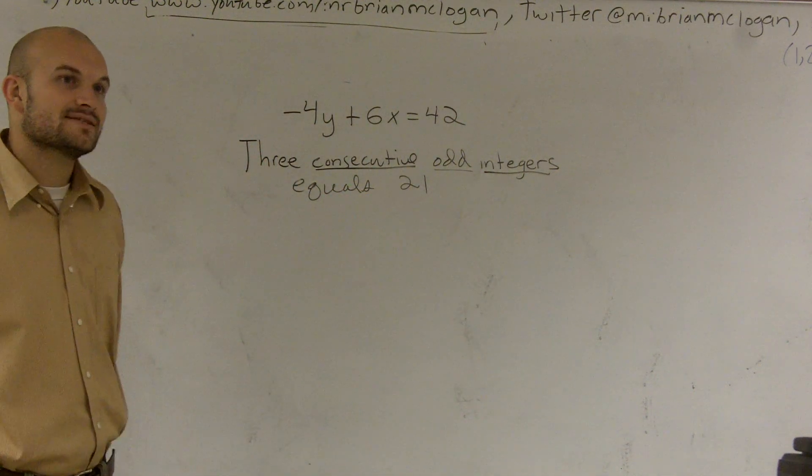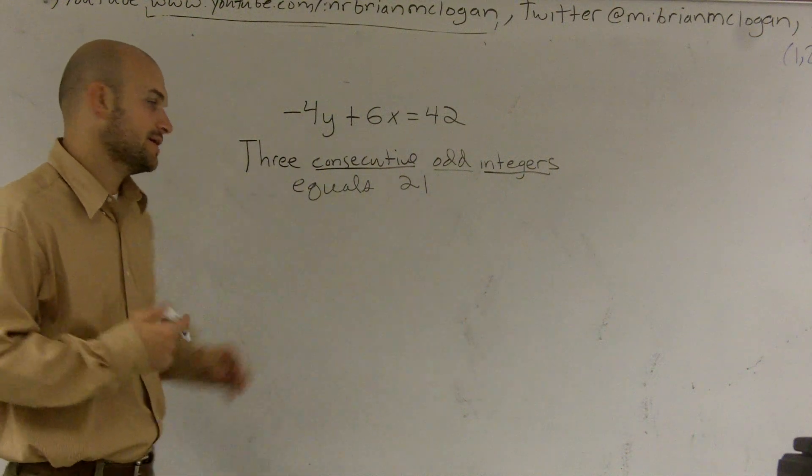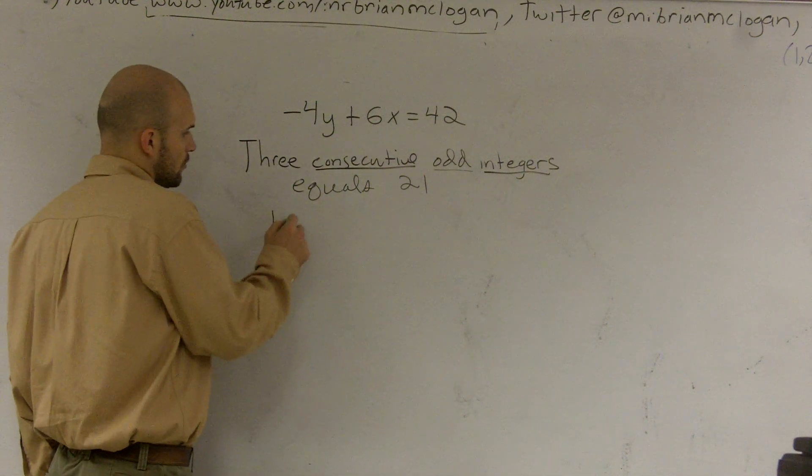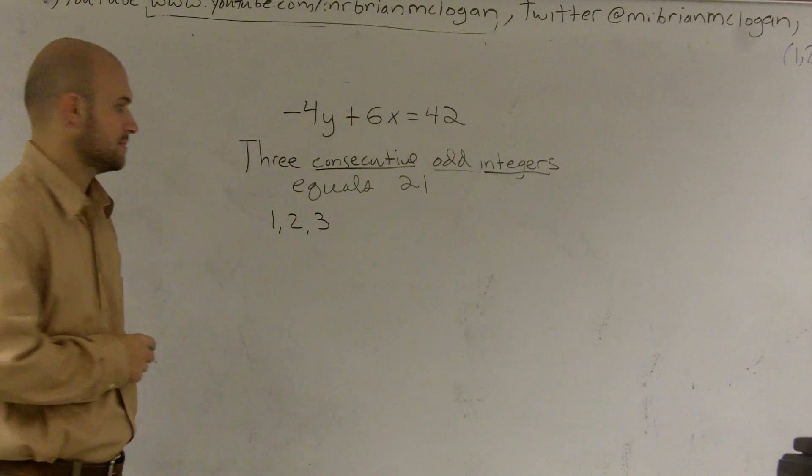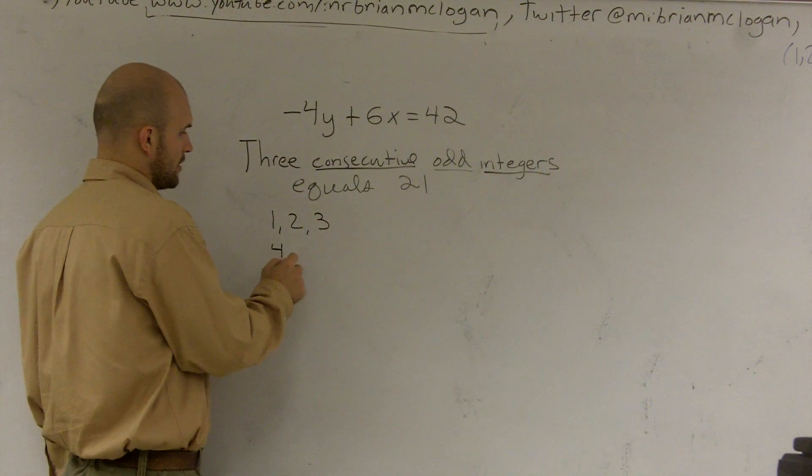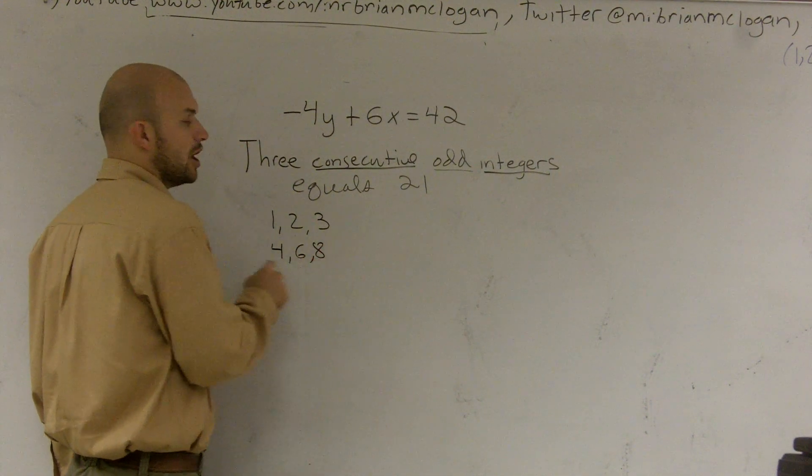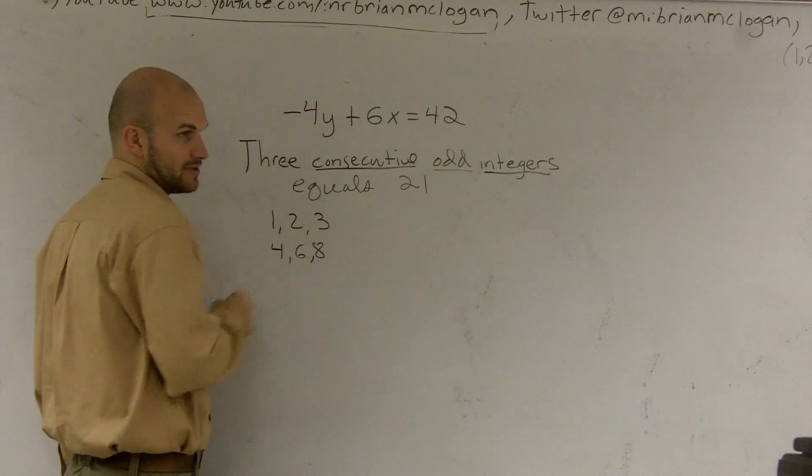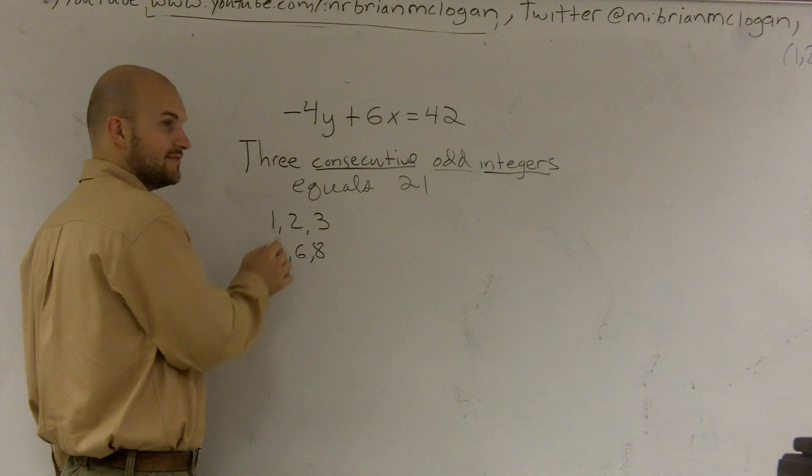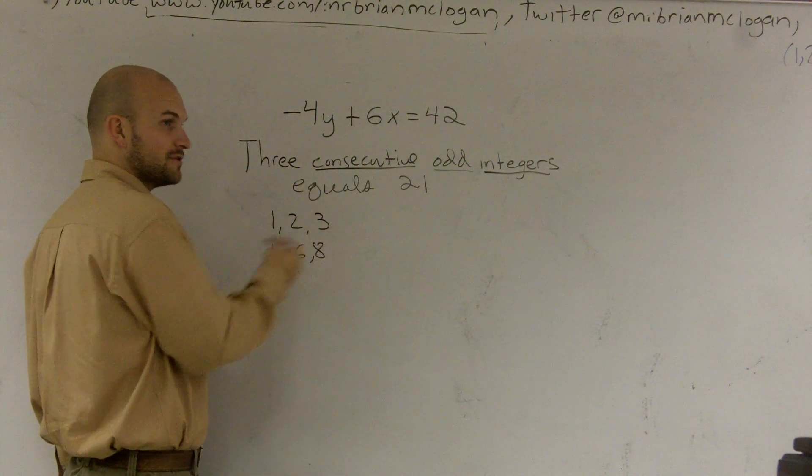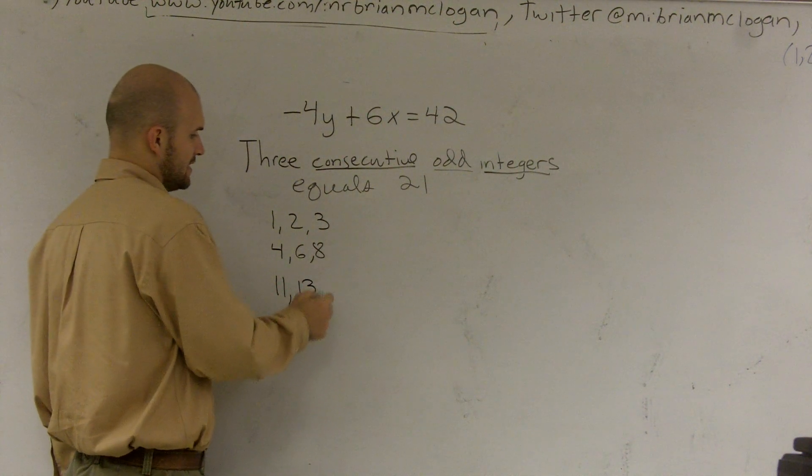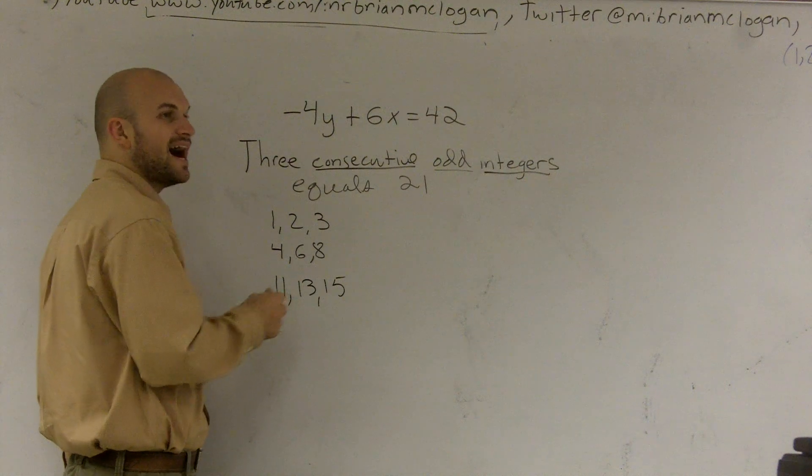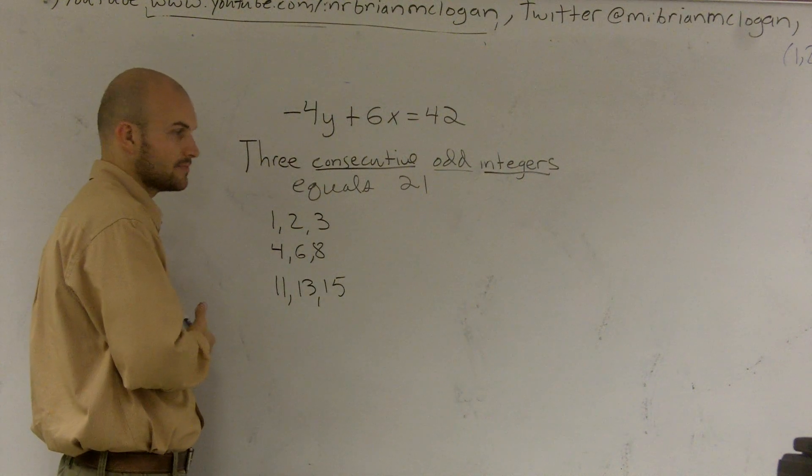Consecutive means one right after a number. So like the numbers 1, 2, 3 are consecutive. The numbers 4, 6, and 8 are consecutive even numbers, because they're the next even number right after the previous one. And 11, 13, and 15 are consecutive odd numbers.